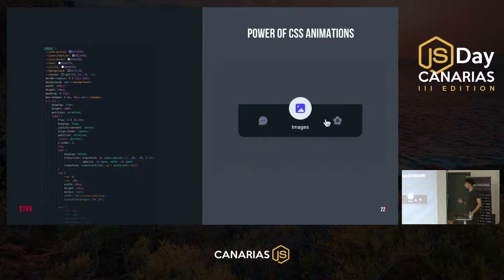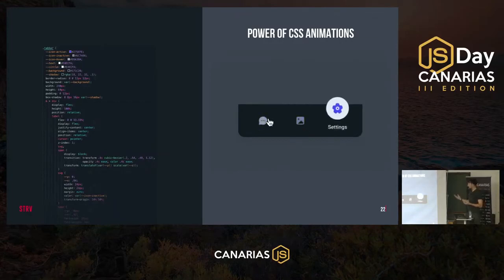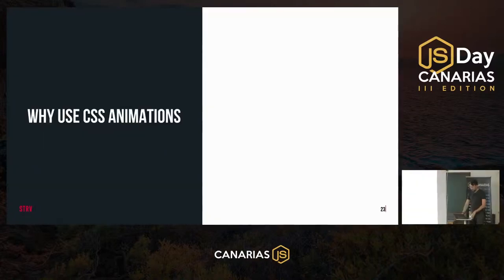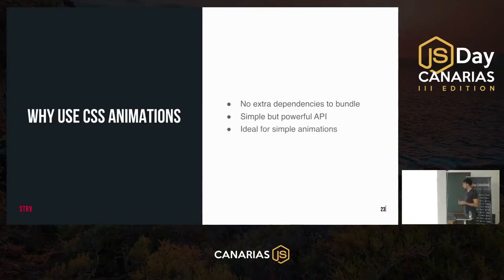CSS animations are very powerful. There's an interaction created by German designer Aaron Eicher that uses zero lines of JavaScript — it's purely CSS, very smooth and interactive. The downside is it requires more than 150 lines of very complicated CSS. To summarize: we want to use CSS animations because they have no extra dependencies to bundle, keeping bundle size small. They provide a simple but powerful API sufficient for a wide variety of cases and are ideal for simpler animations.